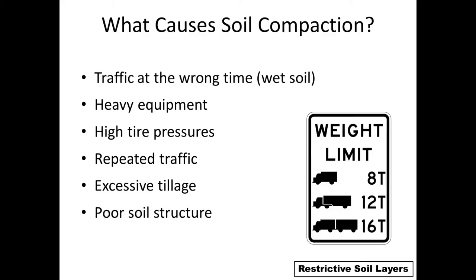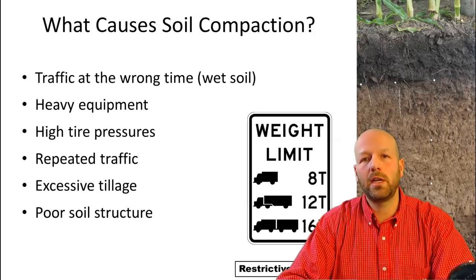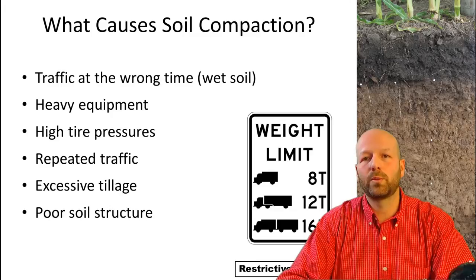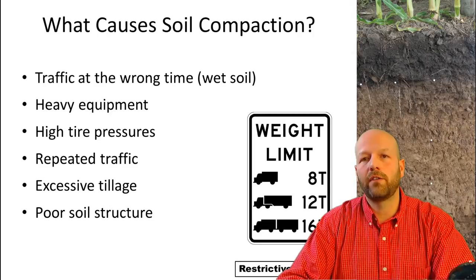Higher tire pressure makes your tractor less efficient — you get more slippage — so that's a double problem. Repeated traffic can be very harmful and create a lot of compaction. However, keep in mind that under the right conditions the first pass of a vehicle can cause up to 70% of that compaction. Excessive tillage can also be a big problem: every tillage operation breaks some soil aggregation. Occasional tillage when needed is not a big deal, but recreational tillage will cause over-destruction of aggregates and really affect soil aggregation.